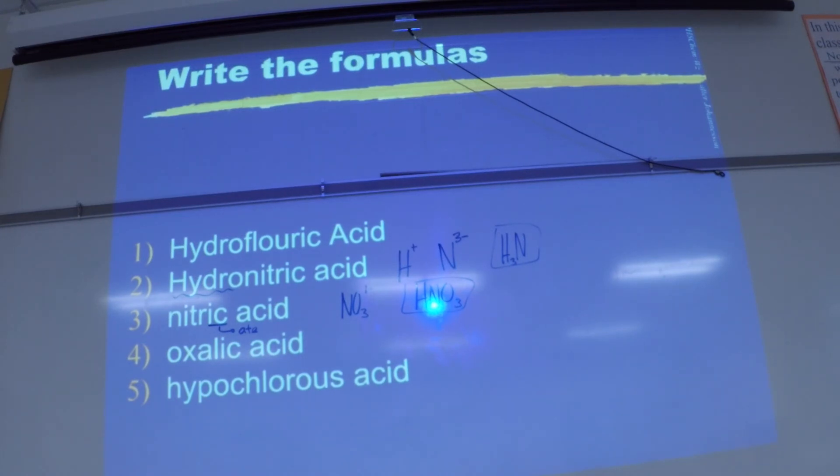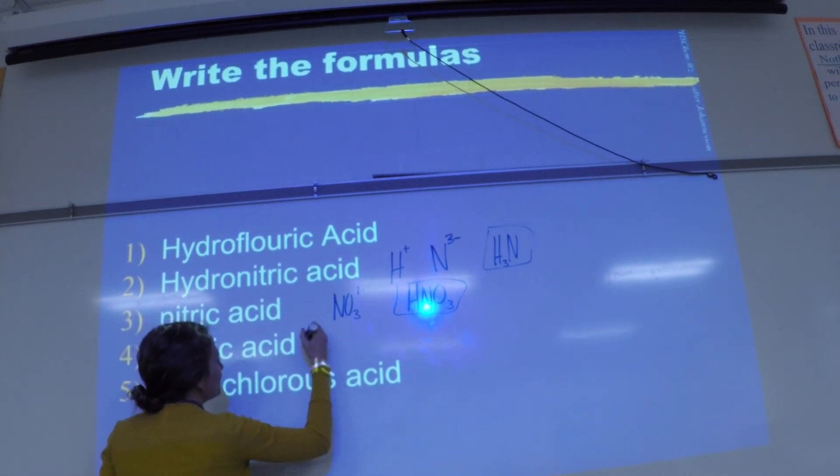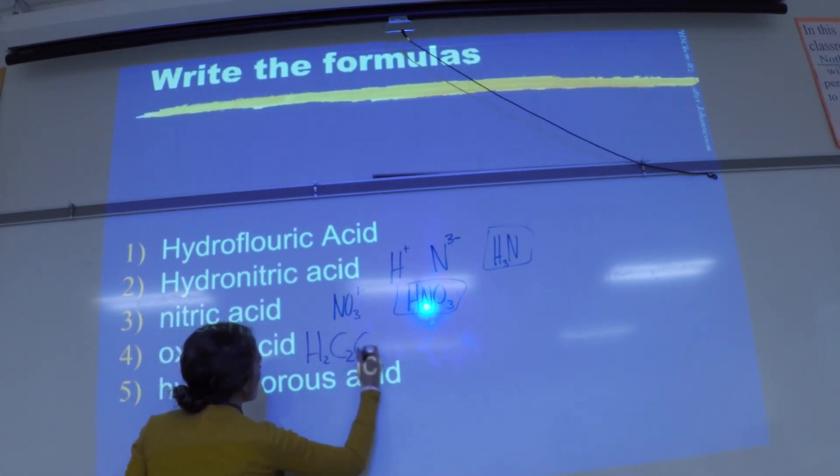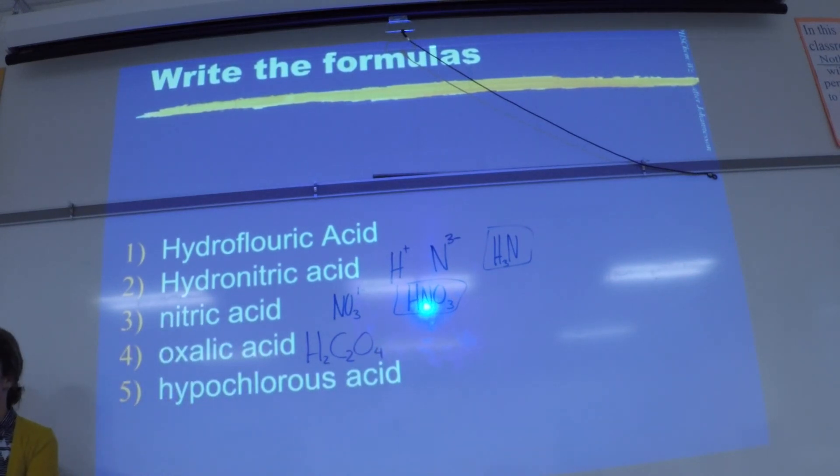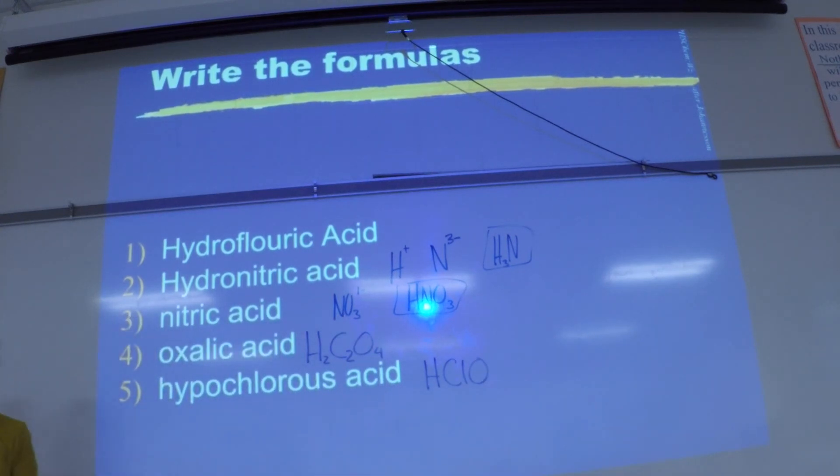Okay, try four and five for two more smiley faces. Try four and five. Read five very carefully though. Okay, so try four and five. You should have H2C2O4. Questions on that one? Now for this one, hypochlorous acid, you should have HClO. Be careful with this hypo that you don't read it too quickly and think it says hydro, okay? Because then you would do it wrong. All right, any questions with formulas for acids?